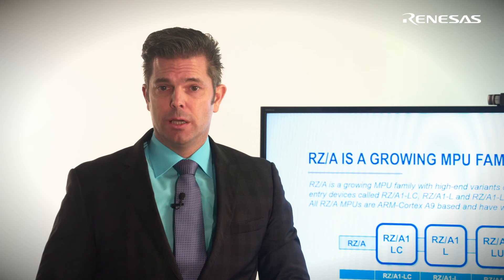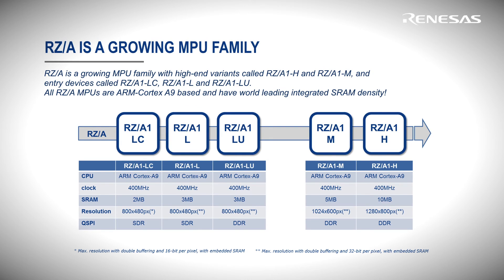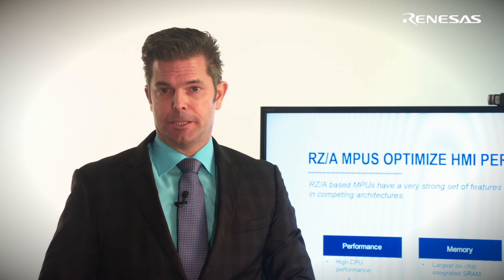RZA is a growing MPU family primarily targeting mid-range HMIs. It has high-end variants called RZA1H and RZA1M, and entry devices called RZA1LC, LN, and LU. All RZA MPUs are ARM Cortex-A9 based and have world-leading integrated SRAM density. All future RZA MPUs will be part of this program as long as the overall prepaid program runs. RZA-based MPUs have a strong set of features that work in sync to remove performance bottlenecks present in competing architectures.